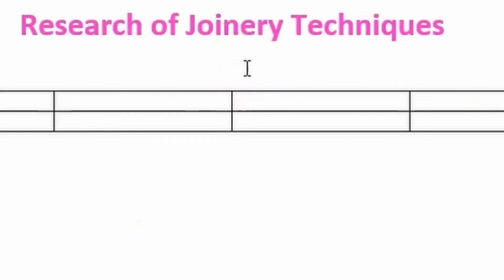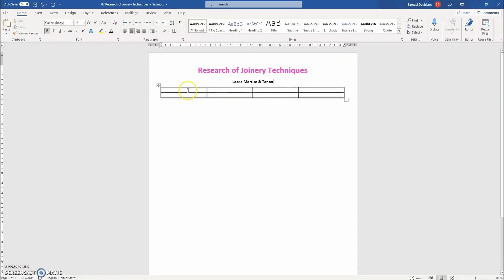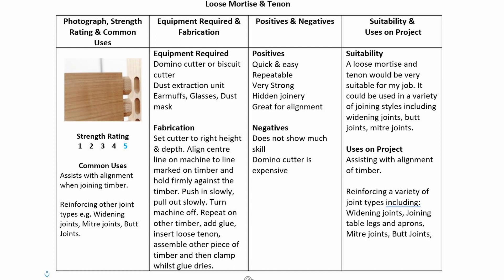It is time to add some headings. The first heading to be added is the table heading, which in this case will be for a loose mortise and tenon joint. Following that, you need to add headings within the table. This is where I recommend that you pause the video, copy the headings down, and then resume this tutorial. This is what the table should look like when it's completed.